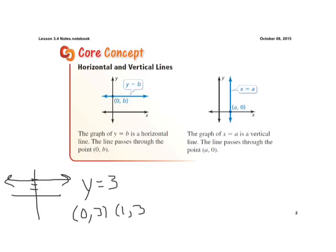If we think of 1, 3, that's also on our horizontal line. We go right 1 up 3. No matter what our x coordinate is, that point is always going to be on the y axis at 3.